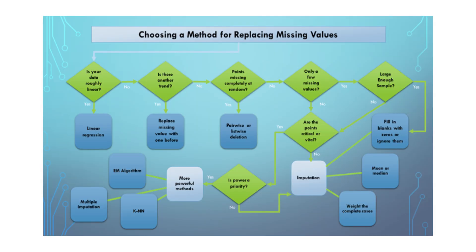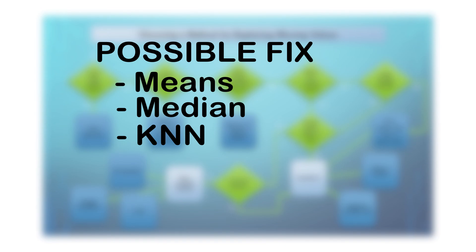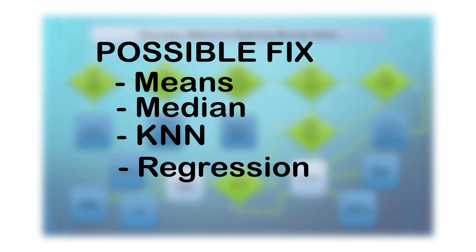Each missing value needs the right treatment based on why it's missing. Sometimes it's random, sometimes it's meaningful — like a customer deliberately skipping a survey question. The fix could be imputation using means, medians, or more sophisticated methods like KNN or regression.